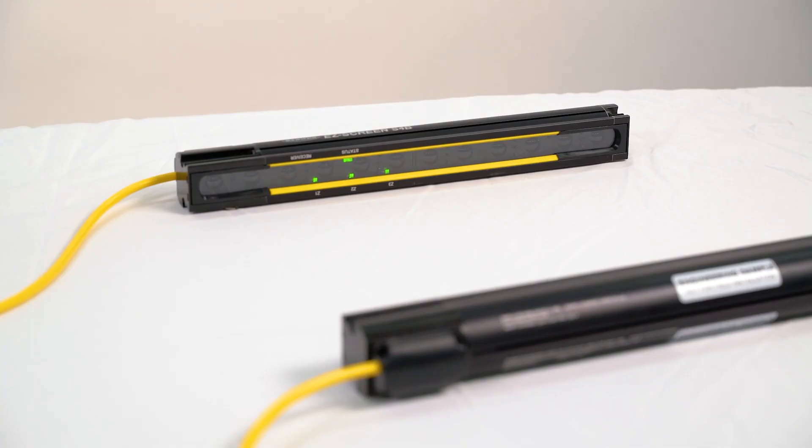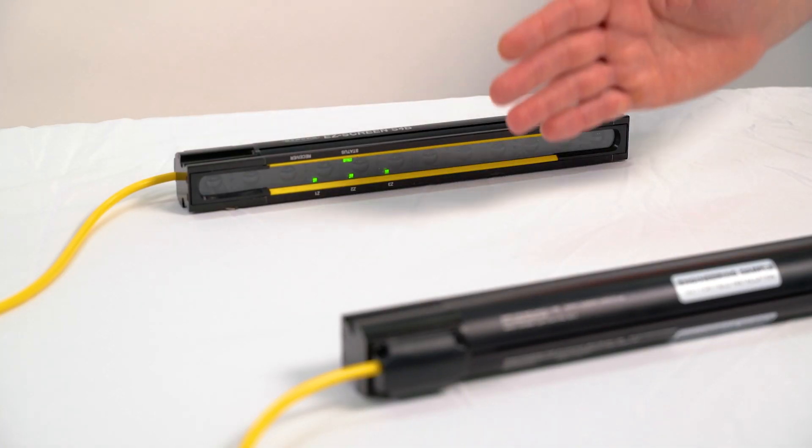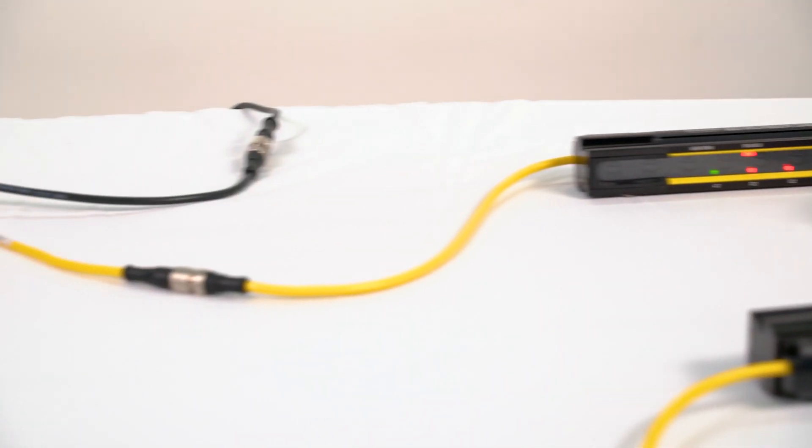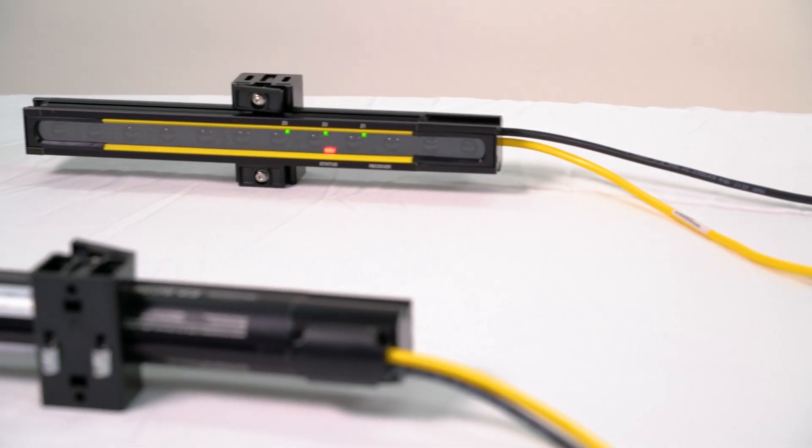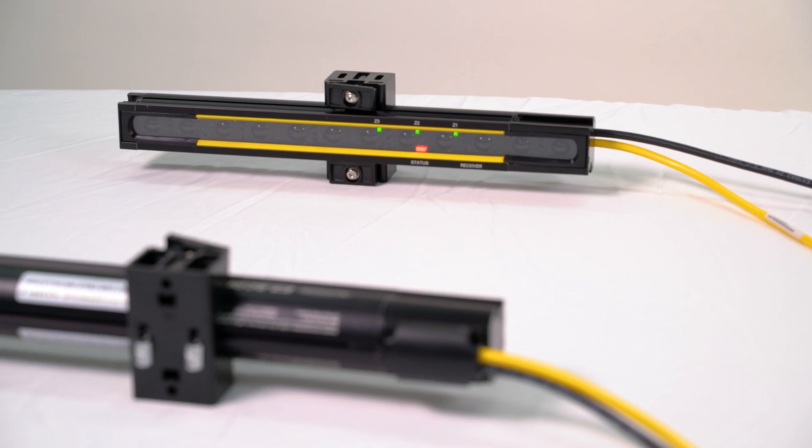You may test to ensure that the communication between curtains is functioning properly by blocking beams on the cascaded curtain. The status LED will turn red on the unit that was blocked as well as on the first receiver in the chain.